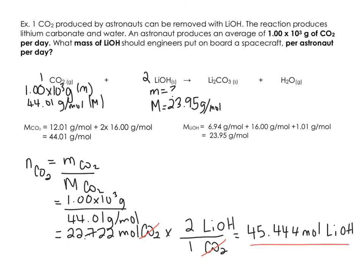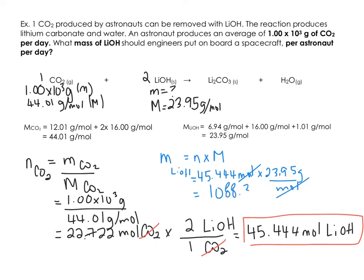So we've got this number of moles of lithium hydroxide. Now we need to calculate the mass of lithium hydroxide. We've gone from mass to moles to moles, and now we're going to mass. Mass of lithium hydroxide equals the moles times the molar mass, so 45.444 moles times 23.95 grams per mole. Moles cancel, we're left with grams.